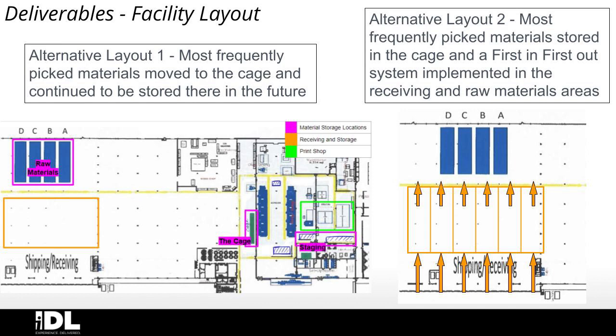The yellow is the main walking path throughout the warehouse. Our first recommendation is to move the most frequently picked materials to the cage — the secondary storage location closer to the print shop — and continue to store them there. This would mean fewer long trips to the raw material storage, which is on the opposite side of the building from the printers. Our second recommendation is to implement storing the most frequently picked materials in the cage, as well as reorganizing the materials stored in the receiving department to have a first-in, first-out system.